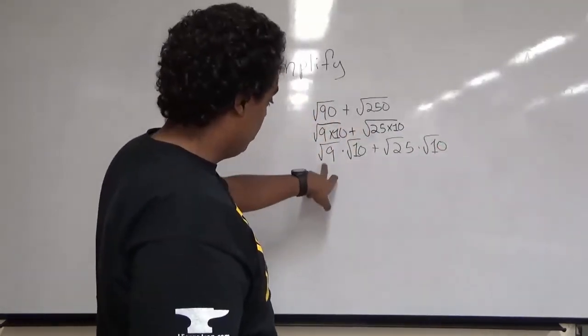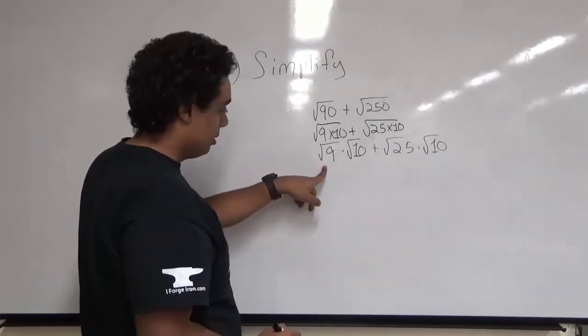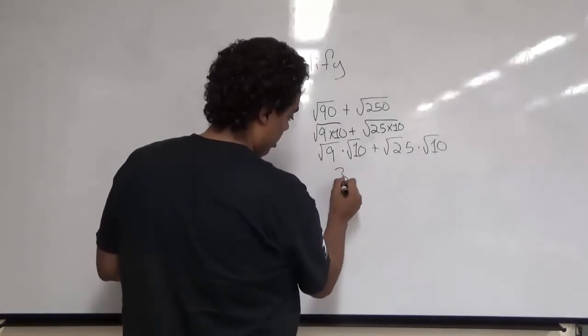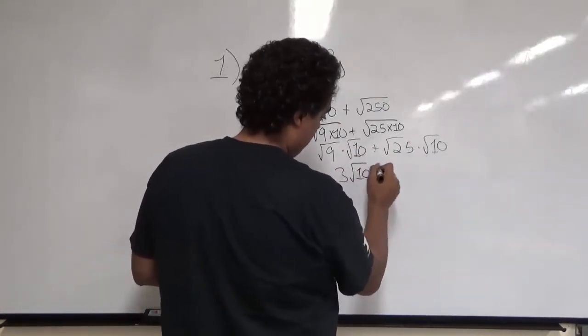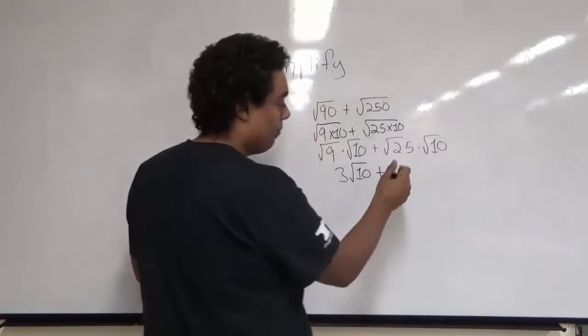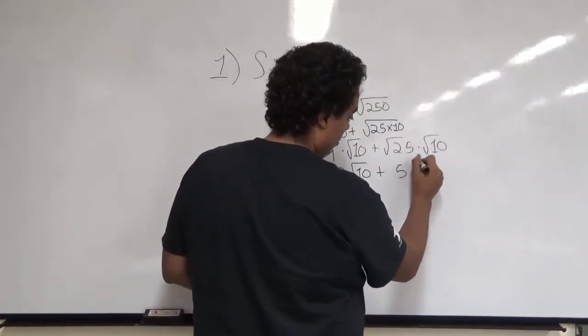And so now we can just pop these guys out of their square roots. The square root of 9 is 3, so 3 and we bring down the square root of 10, plus the square root of 25 is 5. So we have 5 times square root of 10.